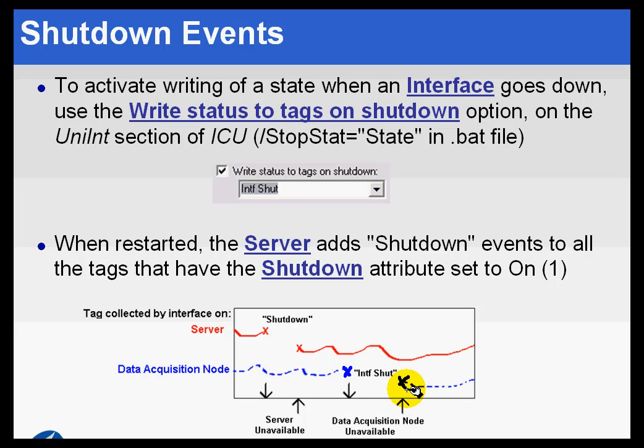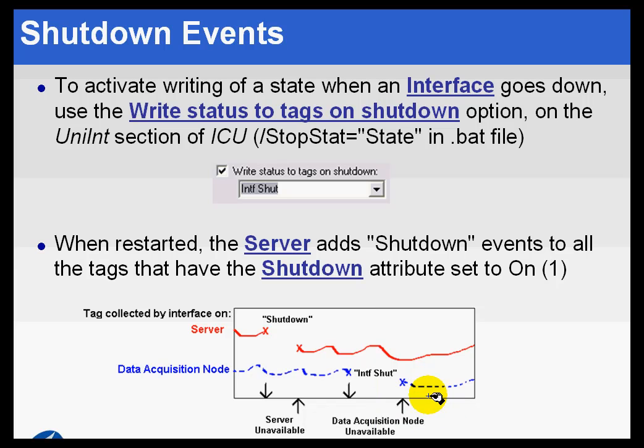So we want to see those Xs in there — that represents digital values. And that way, if somebody puts a trend cursor across here, they won't get a value that is misleading.